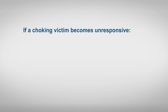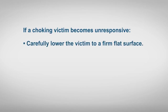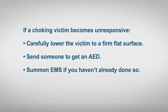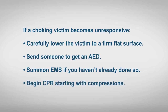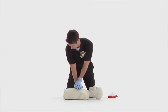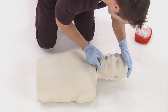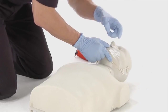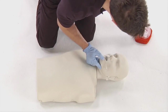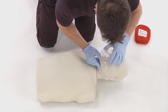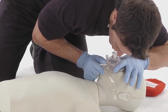If a victim who is choking becomes unresponsive, carefully lower the victim to the ground. Send someone to get an AED and summon EMS if you haven't already done so. Immediately begin CPR, starting with chest compressions. After giving compressions, open the victim's mouth and look for an object. If you see something in the mouth, remove it with a finger sweep. If you do not see the object, do not perform a blind finger sweep. If you have removed an object or you can't see an object, try giving two ventilations.